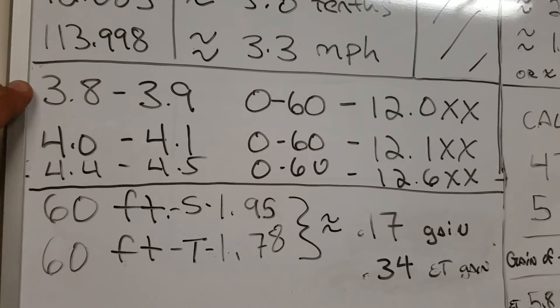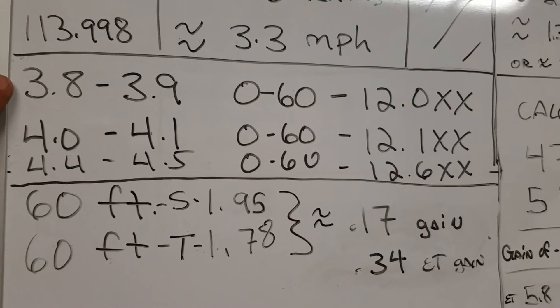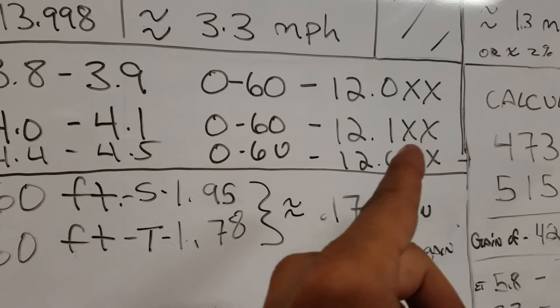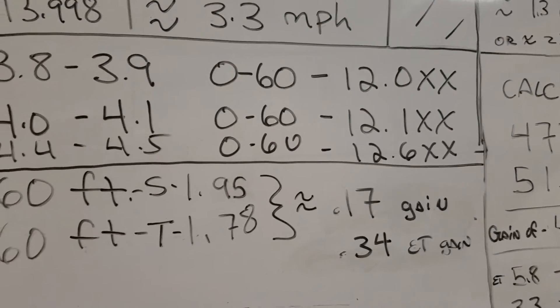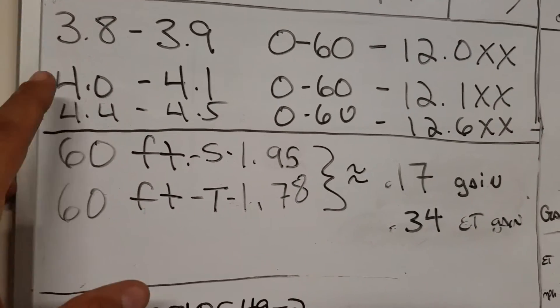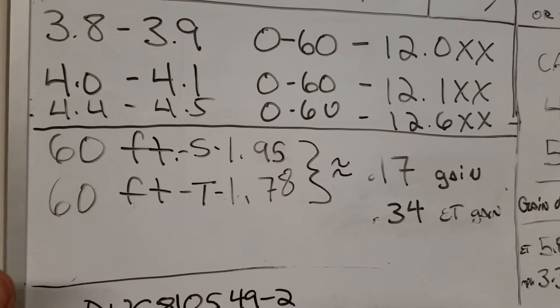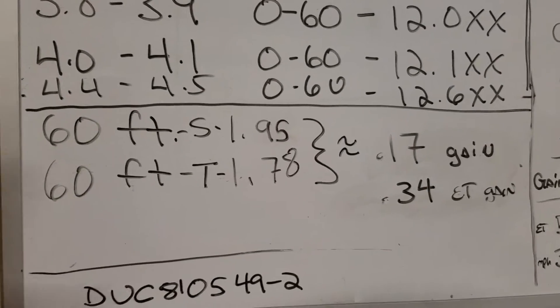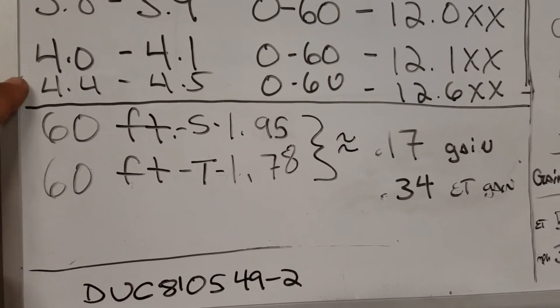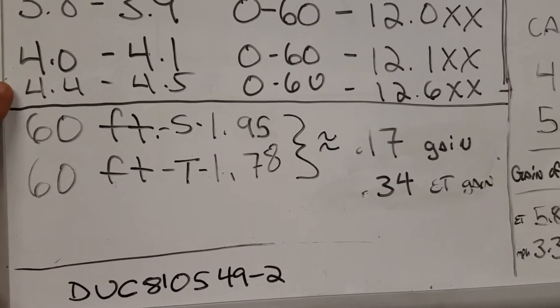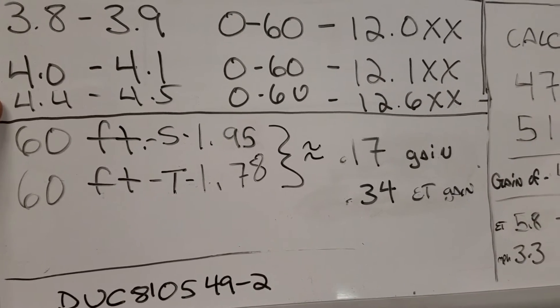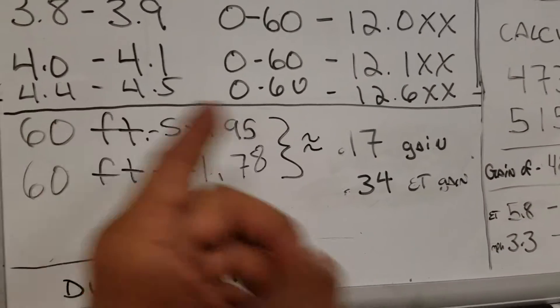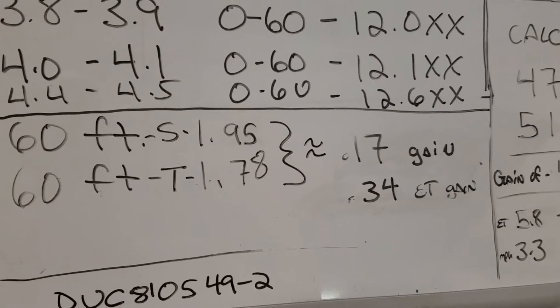But what I did want to show is something a little bit interesting to me. When the car ran 0-60 in 3.8 to 3.9 seconds, that would always translate into a 12.0 pass. 4.0 to 4.1 translate into one of those 12 teens I was just showing you. And that based on the 0-60 times that I ran before with the stock tires, I did log a few of those with the stock tune and the stock tires at the track, would usually translate to around a 12.6.